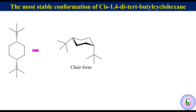Out of the two tert-butyl groups, one is axial while the other is equatorial. The tert-butyl group is a very bulky group. There are two axial hydrogens making a 1,3-diaxial relationship with the tert-butyl group. So if the tert-butyl is axial, there will be very strong 1,3-diaxial repulsive interactions between the tert-butyl group and these two hydrogens.